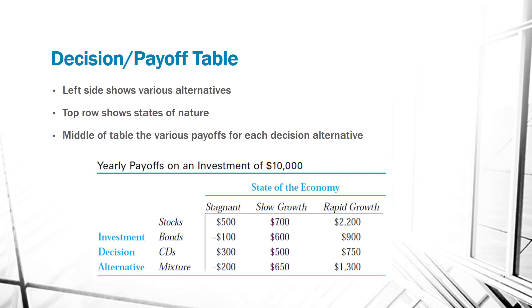What we typically have is this decision or payoff table. On the left side are our alternatives — in this case, if we wanted to do an investment of $10,000, our alternatives are: do we invest in stocks, bonds, CDs, or a mixture of more than one. The top row shows the states of nature — in this case, the state of the economy, something our decision has no control over. The middle of the table shows the various payoffs depending on each decision alternative. For example, if you have a stagnant state of economy, CDs are going to make $300, while you're going to lose money in stocks, bonds, or a mixture. Rapid growth — stocks are the way to go.